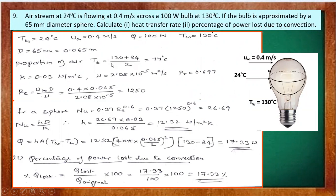First, get the properties of air at the bulk temperature: (130 + 24) / 2 = 77°C. At 77°C, go to the properties table and obtain the values of k, mu, Prandtl number, etc. Then find out the Reynolds number.